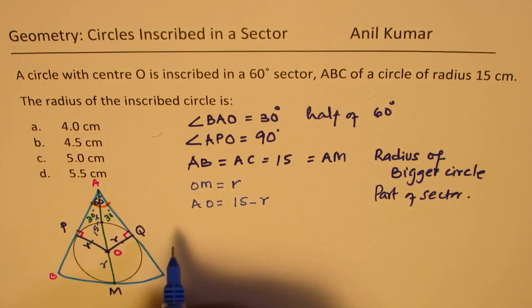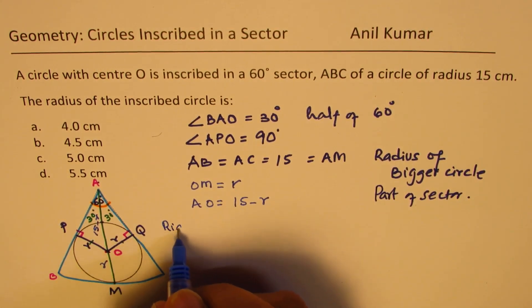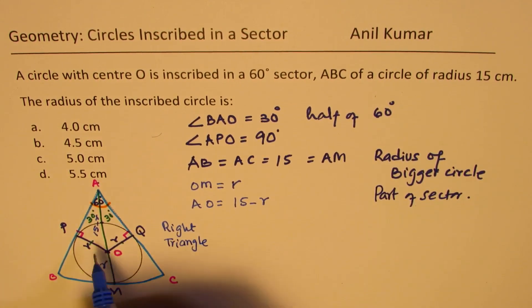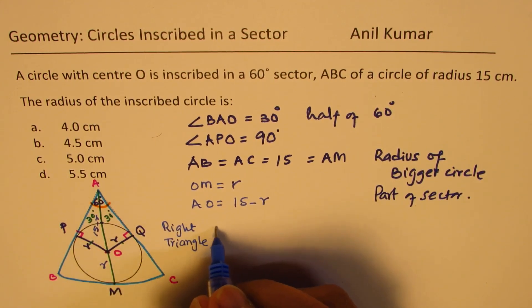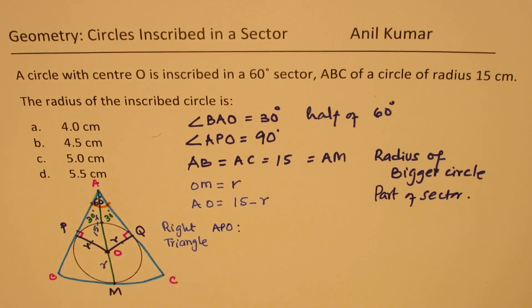Now, we have a right triangle APO. So in that triangle, we can find sine of 30 degrees, which is going to be opposite side, OP, over the hypotenuse AO.